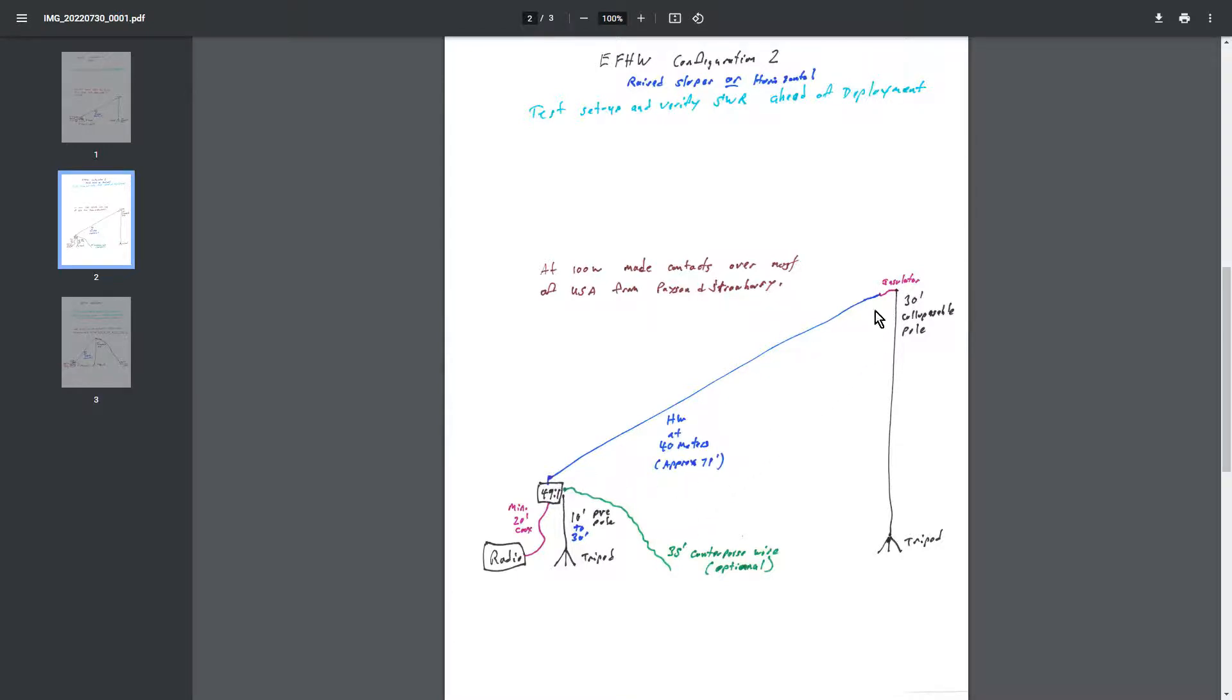So by getting to 10 feet off the ground, I didn't have to worry, people could walk under it. I didn't have to worry about anybody tripping over it. With this configuration, you might want a counterpoise wire. I recommend about 35-foot wire. Just let it hang down and run along the ground or whatever.